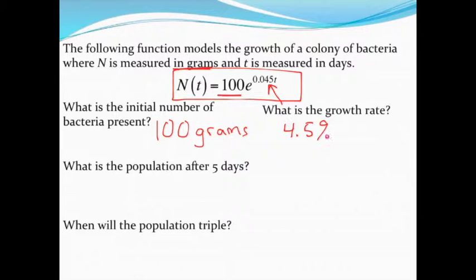To find the population then after five days, I'm going to plug five in for my time period. Notice too, back in the original problem, they did tell me that T in this case was measured in days. That's an important thing to check to make sure that your units are matching up. So getting five plugged in for that time, I need to evaluate this equation or this expression.